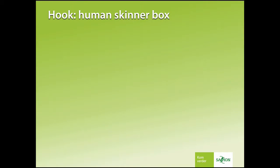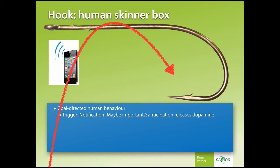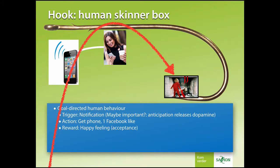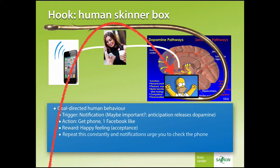Are humans like the monkey in the Skinner box? Well, if we consider goal-directive behavior and add the trigger of the notification on your phone, that will release a huge amount of dopamine. Is this important? Who will it be? It will lead to action — you will get your phone and see one Facebook like. You will have a reward; you're feeling accepted. That will trigger a happy feeling. If we repeat this constantly, then the moment your phone has a notification, you will have the urge to pick it up.